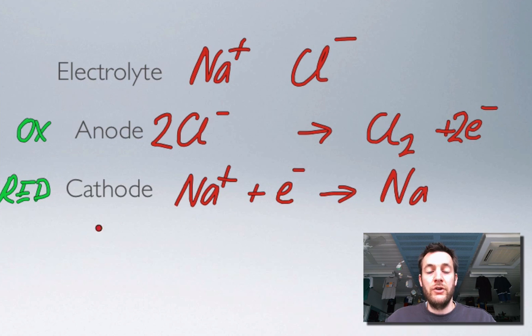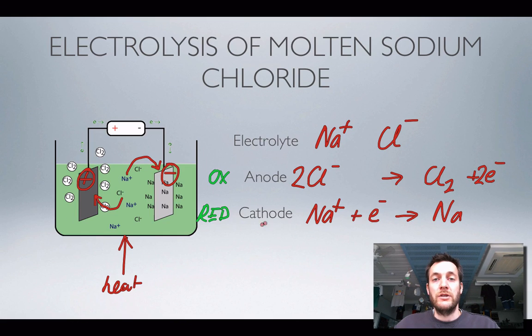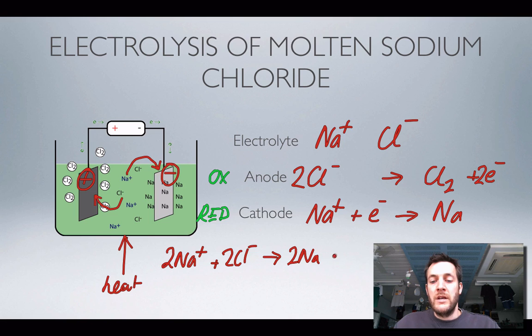Now I could also combine these two half equations to get an overall equation, and I've also covered this before, so I should be able to do this by now. So I've got two sodium ions and two chloride ions, and they're turning into two sodium atoms and a chlorine molecule. So that explains why we're forming sodium at one electrode and chlorine gas at the other.